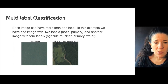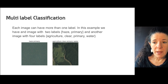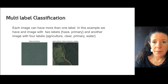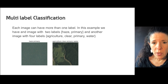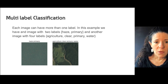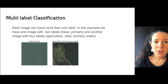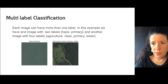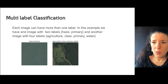There is another related problem called multi-label classification. Here, an image may have several classes simultaneously. For example, a single image might be labeled as agriculture, clear, primary, and water — four classes at once. These images were from a Kaggle competition where for each image patch, you had to predict everything that was in that image.